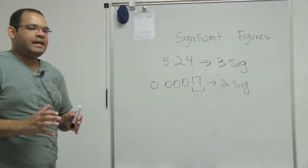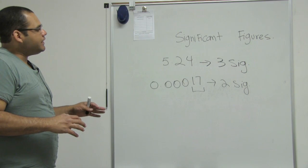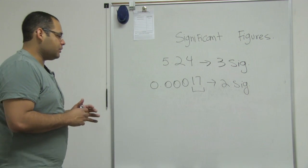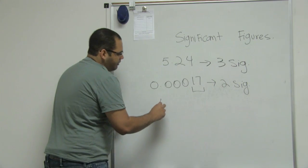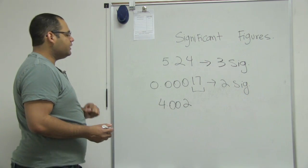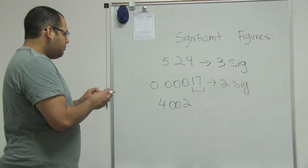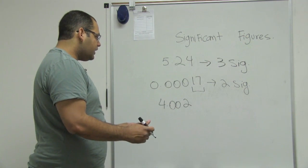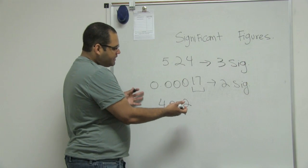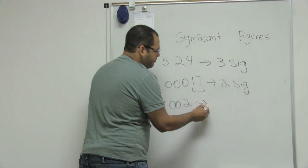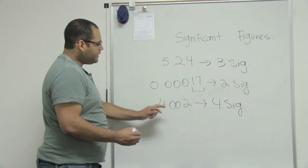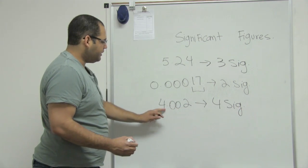Another rule is that if the zero is placed between non-zero numbers. For example, if I have 4.0002, these two zeros are between my non-zero numbers. Therefore, I count the zeros as sig figs. So if I need to say how many sig figs I have in this example, four sig figs, because the zeros are between two non-zero numbers.